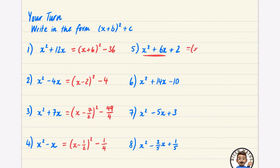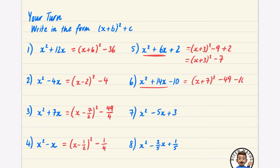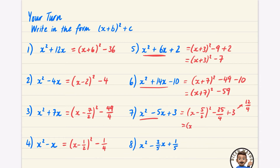For the next ones, I complete the square on the beginning part first. That gives (x + 3) squared minus 9, and then the extra plus 2 makes it (x + 3) squared minus 7. For the next, (x + 7) squared minus 49, and with the minus 10 it becomes (x + 7) squared minus 59. Then (x minus 5/2) squared minus 25 over 4, plus 3. Since 3 is 12 over 4, that gives (x minus 5/2) squared minus 13 over 4.